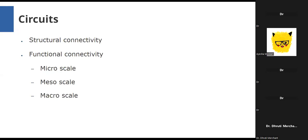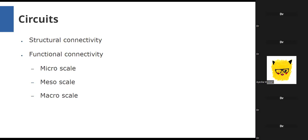The circuits we keep talking about can be structural circuits like the CSTC loop, or functional circuits measured by functional connectivity. Functional connectivity is when two areas of the brain show activity changes in sync with each other or simultaneously. A brain area shows hyper or hypo function in fMRI, and at the same time another area shows an equal change or a reciprocal change—one area lighting up as another goes down. These form functional circuits and networks such as the default mode network and salience network.